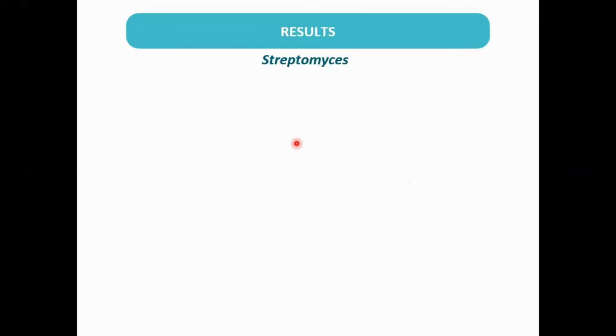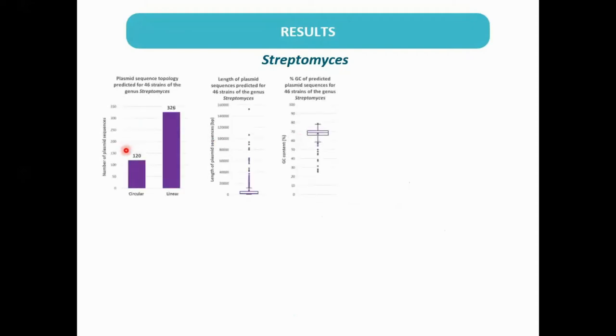Assembled genomes were generally fragmented, even so the prediction methods used were able to identify potential plasmid sequences. Of the 46 Streptomyces strains analyzed, 446 plasmid sequences were predicted, including 120 corresponding to circular elements.